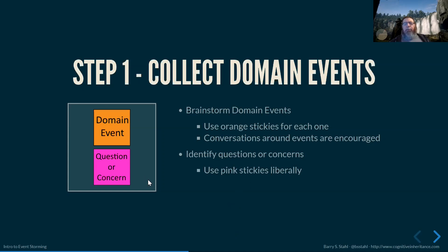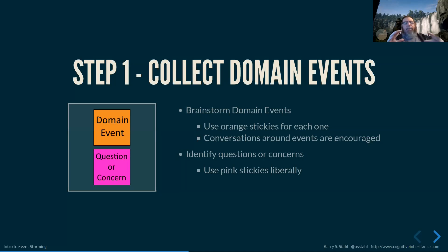The other thing we do in this first step is use pink stickies to identify any questions or concerns. There can be some conversations around them, but we don't want to drill too deep at this point because mostly we're brainstorming. Anywhere we have something like 'is that really right? we may need to look into that' — we throw a pink sticky up there as well. That also gives us a visualization of where in our model the questions are at this point.